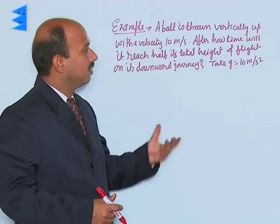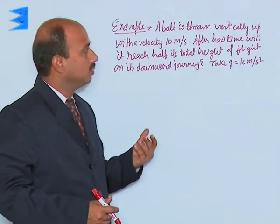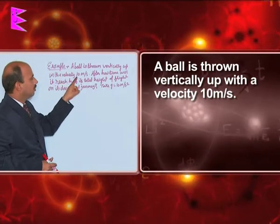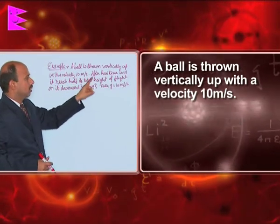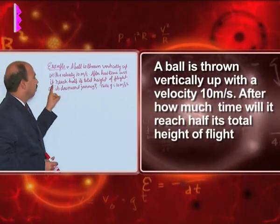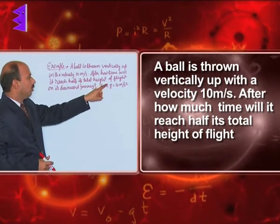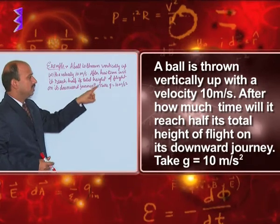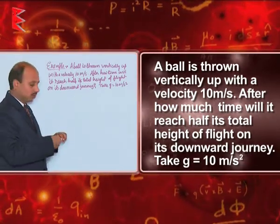See here one example related to vertical motion under gravity. A ball is thrown vertically up with a velocity of 10 meter per second. After how much time will it reach half its total height of flight on its downward journey? Take g is equal to 10 meter per second square.